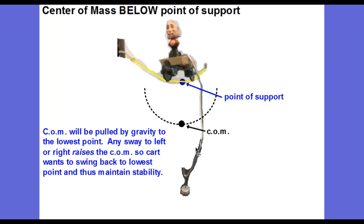However, if we hang the weight and lower the center of mass so that it is now below the point of support, now we can consider the center of mass to be hanging from the point of support. And if it sways or tips to either side, we see that gravity will want to pull it back to the lowest point. So if the Einstein cycle tips left, gravity wants to pull it back to the right and vice versa. So it maintains its stability. Let's see it in action.